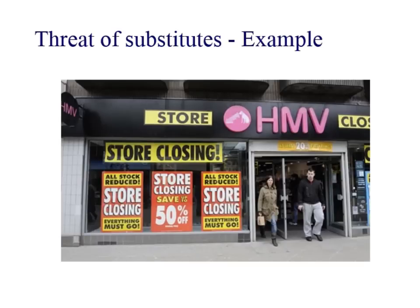A good example here is HMV. Why did it go out of business, or why did they have to close down a lot of stores and go into administration? Substitutes, really. Where do we buy our music from these days? iTunes, or some people download it illegally. And when I used to buy DVDs from HMV - I don't buy any DVDs anymore because I've got Netflix, Sky, and Sky On Demand. So I don't really need the DVDs. We can see that the threat of substitutes was very, very high and it had an impact on their profits, ultimately forcing a lot of the stores out of business.